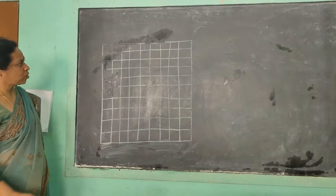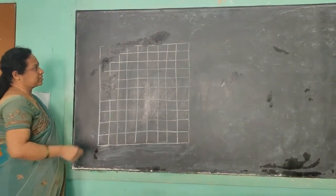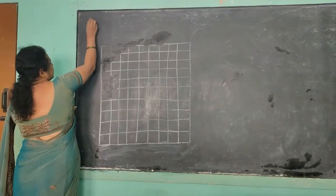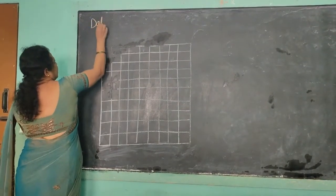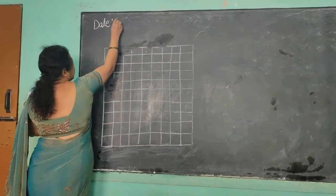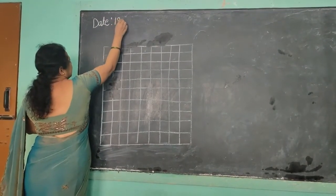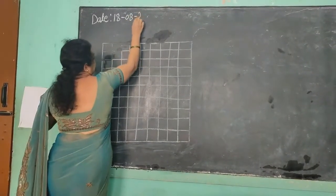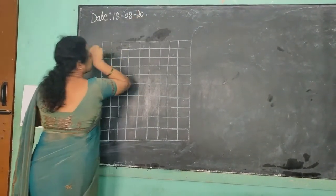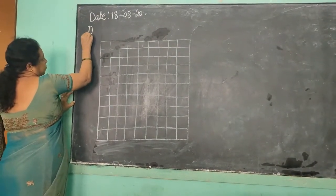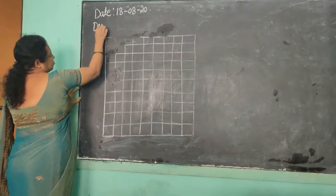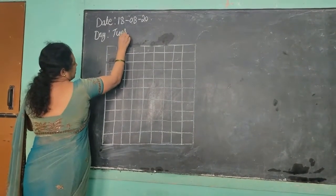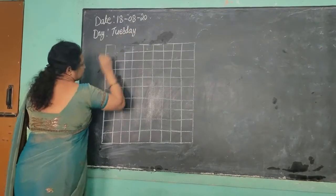Take out your notebook and open your pen and write along with me. First write the date: 18-8-2020. What day is today? Tuesday.